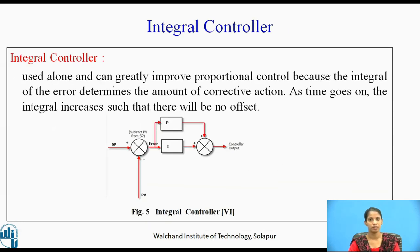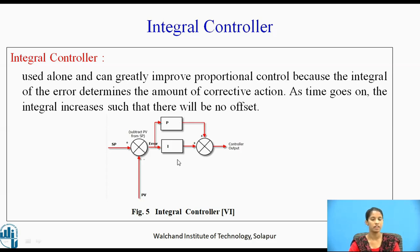Integral controller. The integral controller used alone can greatly improve the proportional controller because the integral of the error determines the corrective action. As time goes on, the integral increases such that there will be no offset. Figure 5 shows the integral controller, which is a combination of proportional and integral controller. In the further slides, we are going to see the limitations of the individual controllers and why they are used in combinations such as PI, PD, or PID.